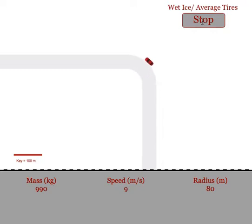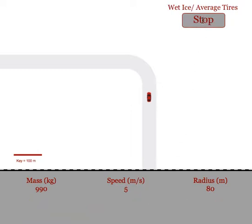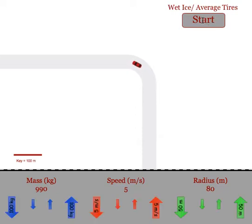Once students realize the car is in an unsafe predicament, they would then want to adjust until they can find the safe speed for this car. So we'll bring it down to 5 meters per second. This time we need to have a little patience because the car is going rather slowly. But we can see already that it looks like the car is going to be successful going around this turn at 5 meters per second.